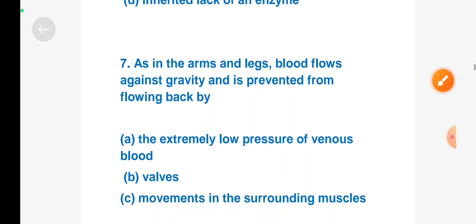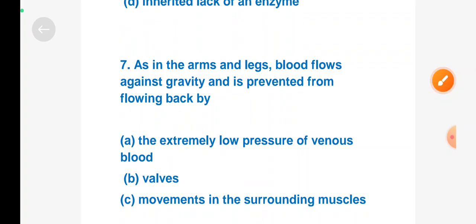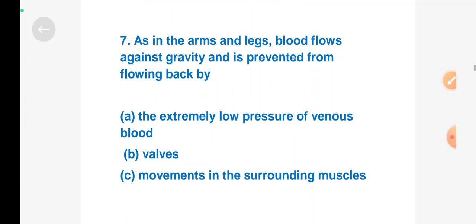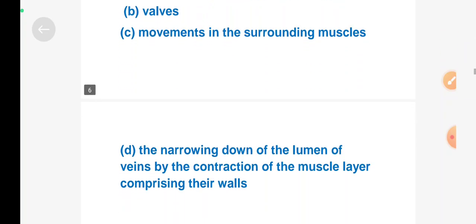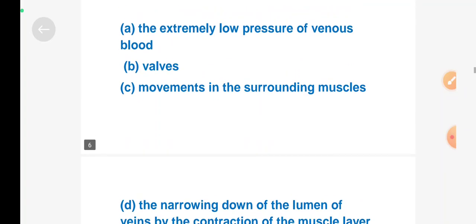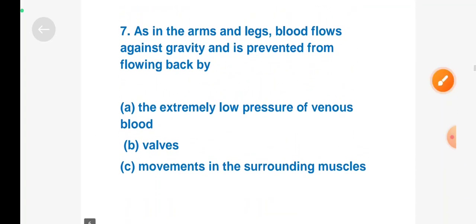Next question: In the arms and legs, blood flow against gravity is prevented from flowing back by - Option A: the extremely low pressure of venous blood, Option B: due to valves, Option C: movement in the surrounding muscles, Option D: narrowing down of the lumen of veins by the contraction of the muscle layer comprising their walls. Right answer is Option B, due to valves.